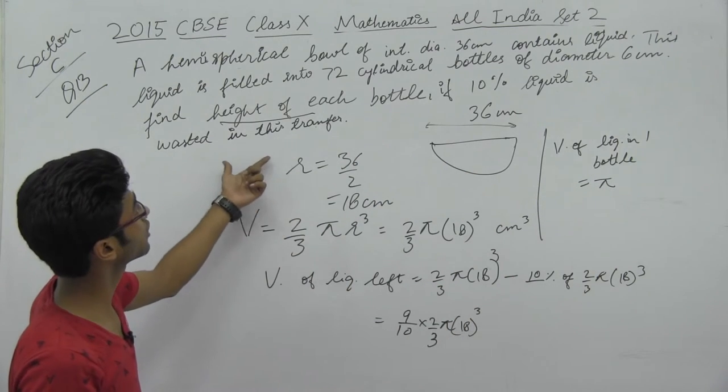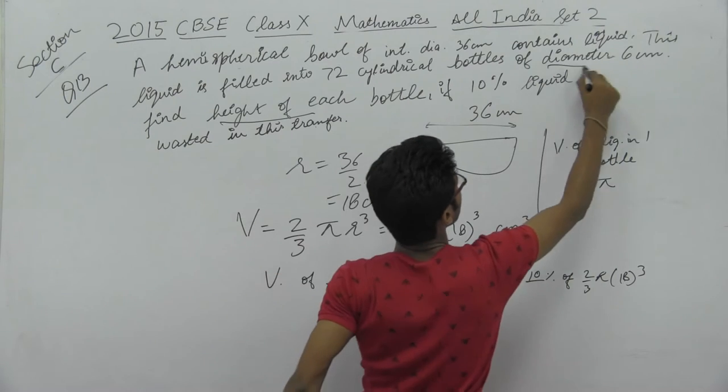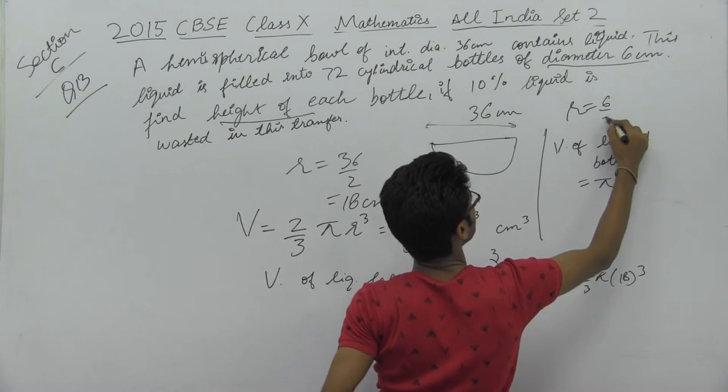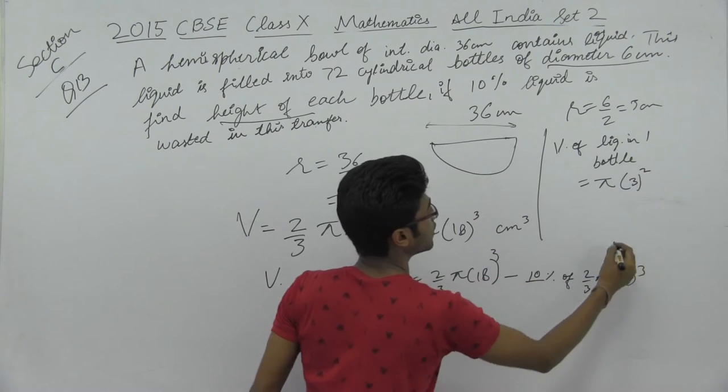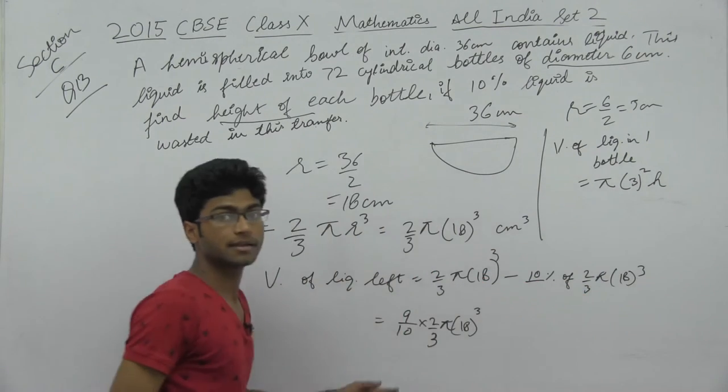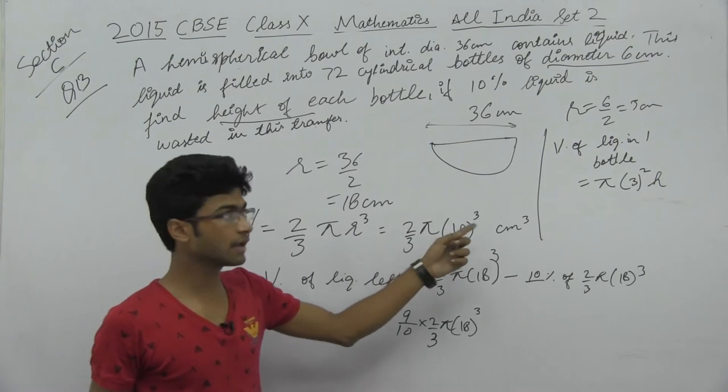The diameter of the cylindrical bottle is given as 6 cm, so the radius is 6/2 = 3 cm. The volume of one bottle is πr²h = π(3)²h.